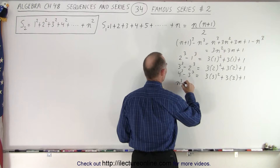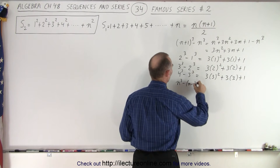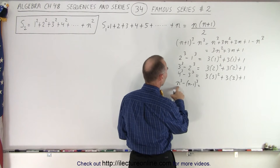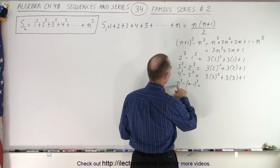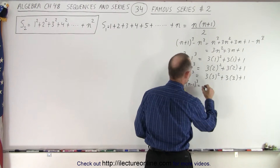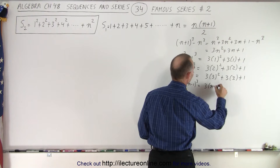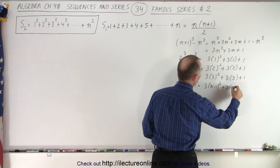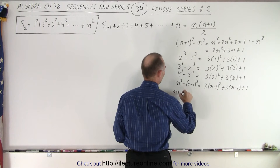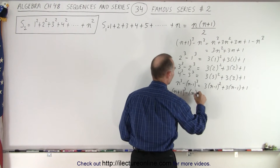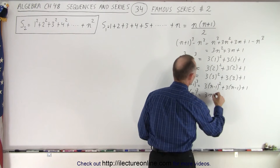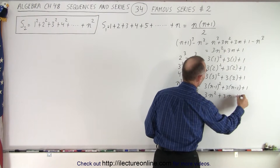And finally, n cubed minus n minus 1 cubed is equal to — here n minus 1 plays the role of n — so that would be 3 times n minus 1 squared, plus 3 times n minus 1, plus 1. And finally n plus 1 cubed minus n cubed is equal to 3n squared plus 3n plus 1.